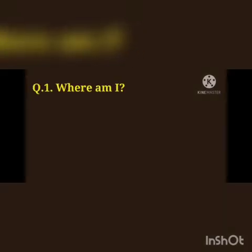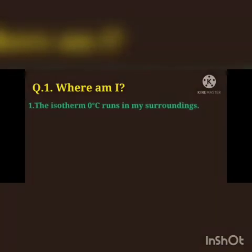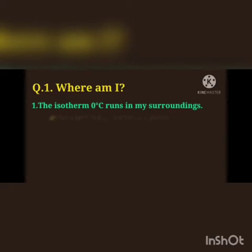Students, here is question number 1: Where am I? First one: the isotherm 0 degree Celsius runs in my surroundings. Answer is Northern Asia or Northern Canada.